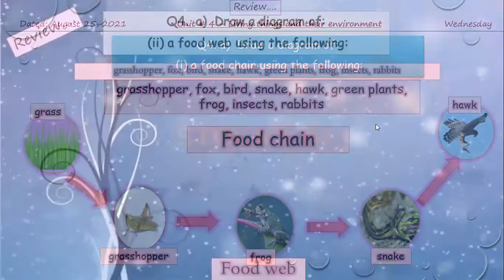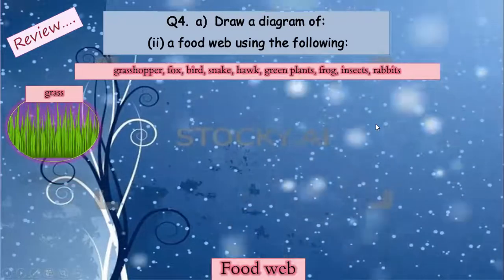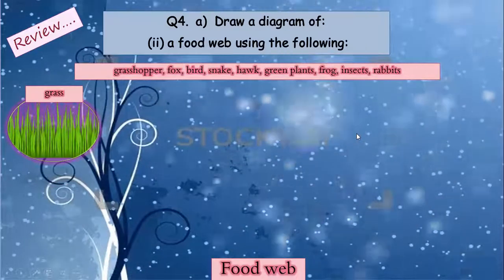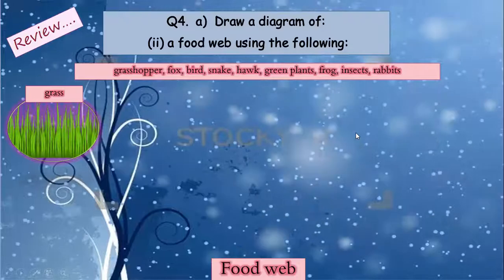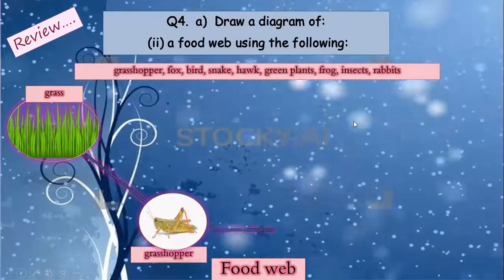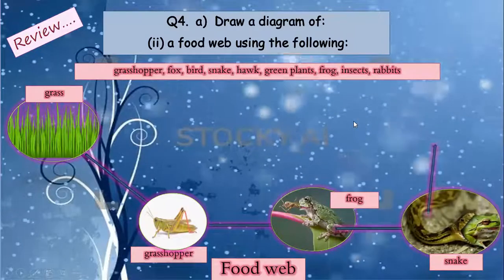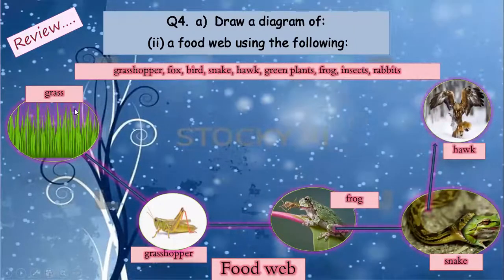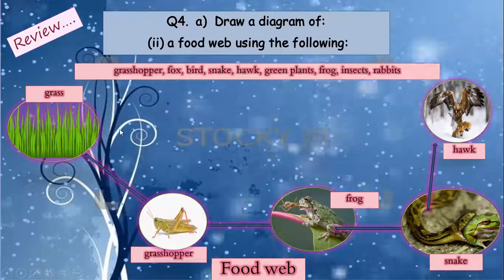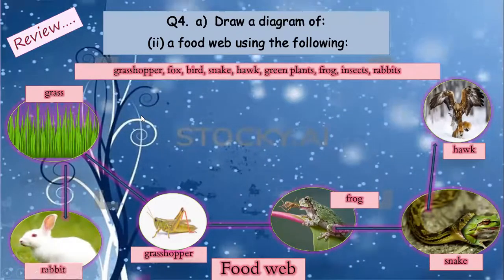Now for the food web: a food web is not simple — it is interconnected because several animals eat different kinds of food. First I'll make the simple food chain that I already made, and then interconnect them. Green grass is also eaten by a rabbit, and also by an insect like a caterpillar.